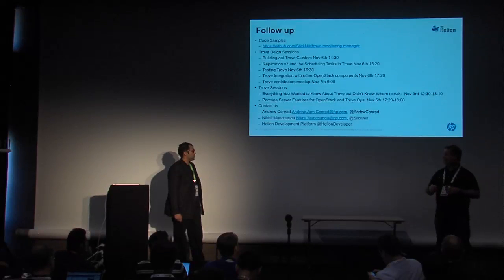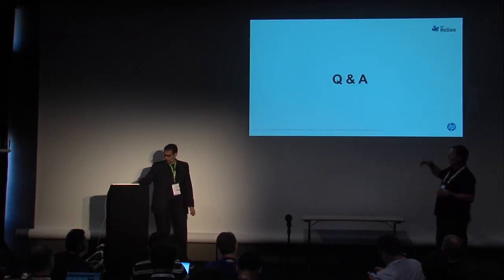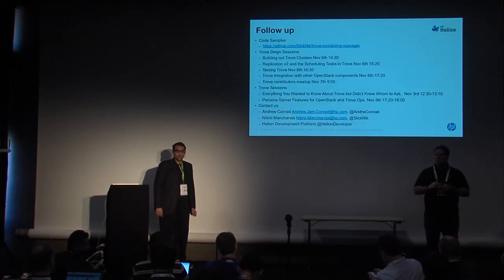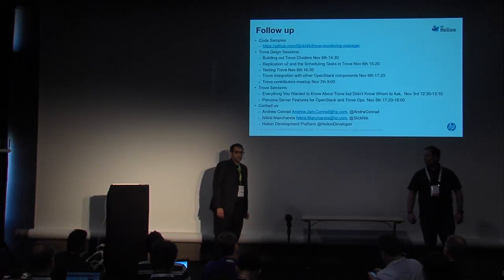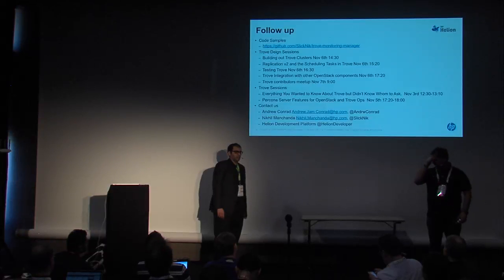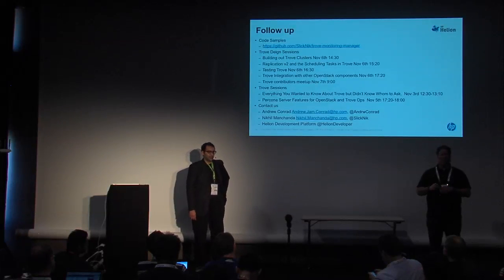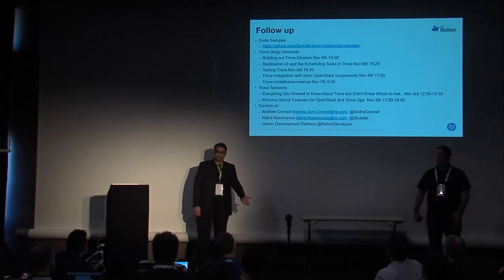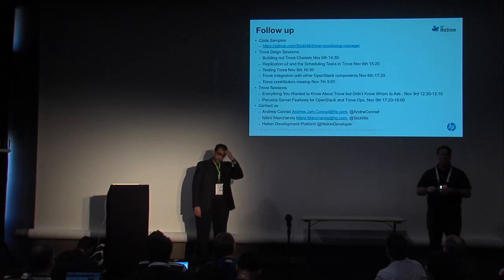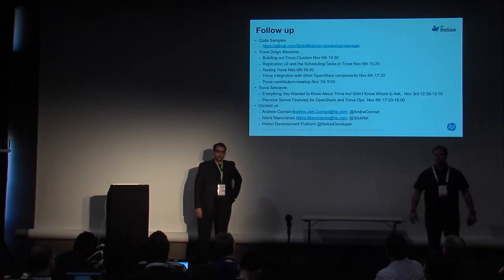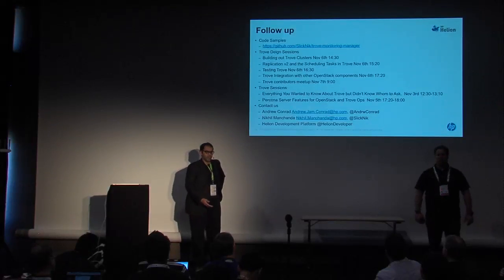We'll take questions now. Today we don't have any Trove APIs that support putting the old master back as a slave of the promoted instance. We should discuss how often that scenario comes up and whether we need to handle it. If you find out it was just an intermittent network failure and there's nothing really wrong with the instance, then having an API to put that master back as a slave is something we should talk about — but we don't do it currently.